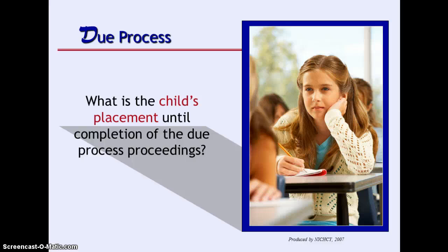What is the child's placement until completion of the due process hearings? IDEA requires that once notice of a due process complaint requesting a due process hearing is sent to the other party, during the resolution process time period while waiting for the decision of any impartial due process or court proceedings, unless the parent or the state or the school district agree otherwise, the child must remain in his or her current educational placement pending the completion of the proceedings. That's often referred to as stay put.